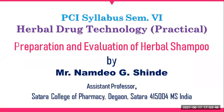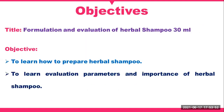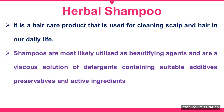Next is the preparation and evaluation of herbal shampoo. The objectives for this practical are to learn how to prepare herbal shampoo and to learn evaluation parameters and the importance of herbal shampoo in detail. Shampoo is a hair care product used for cleansing the scalp and hair. Shampoos are commonly utilized as beautifying agents and are aqueous solutions of detergents containing suitable additives, preservatives, and active ingredients.